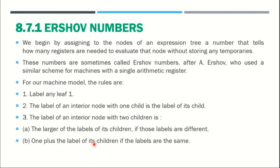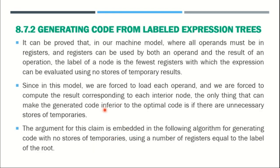If the labels of the children are different — in case the particular child is the larger child — we choose the label value or numbering as 1 plus the number of children. For example, 1 plus 1 equals 2, or 1 plus 2 equals 3, and so on. Now we can generate code from labeled expression trees and discuss how to generate target code from labeled expression trees.